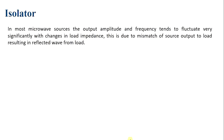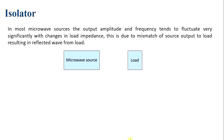In most microwave sources, the output amplitude and frequency tend to fluctuate significantly with changes in load impedance. This is due to mismatch between the source output and the load, resulting in a reflected wave from the load. If ZL is not equal to Z0 — that is, the load impedance is not equal to the characteristic impedance — the signal gets reflected.